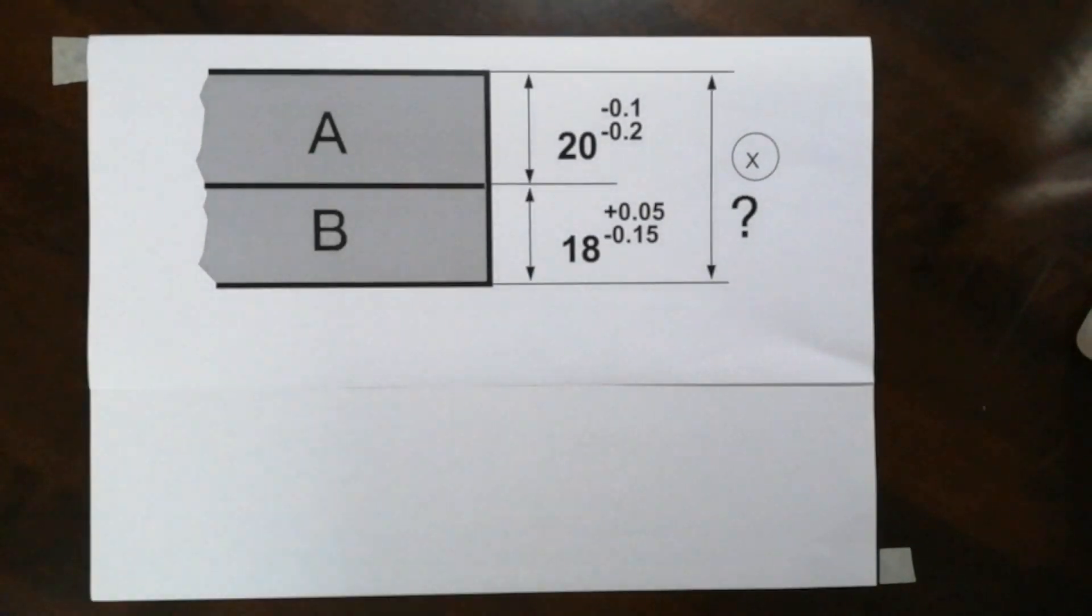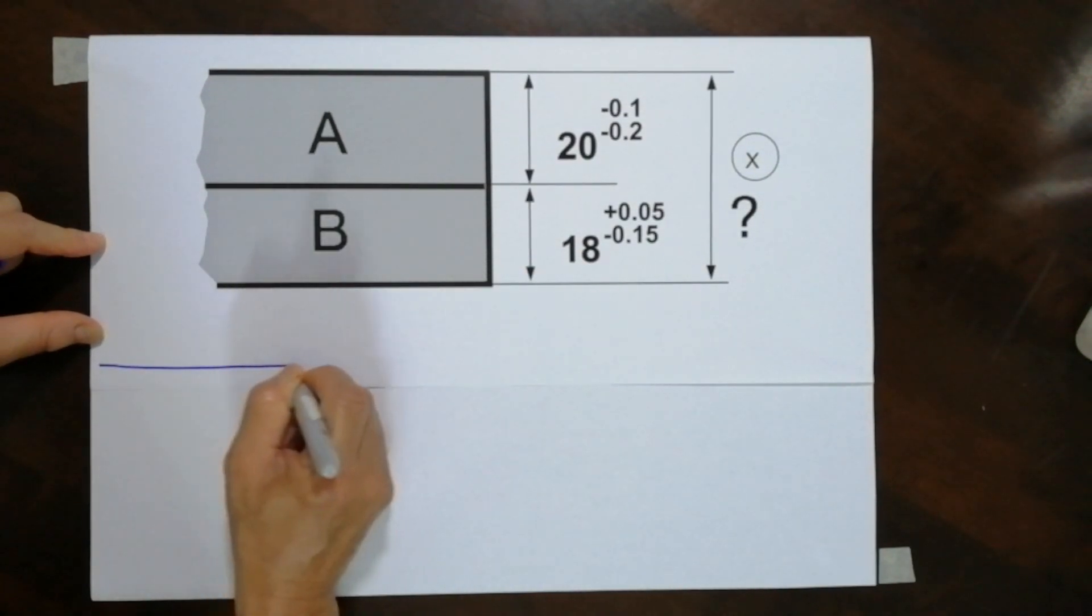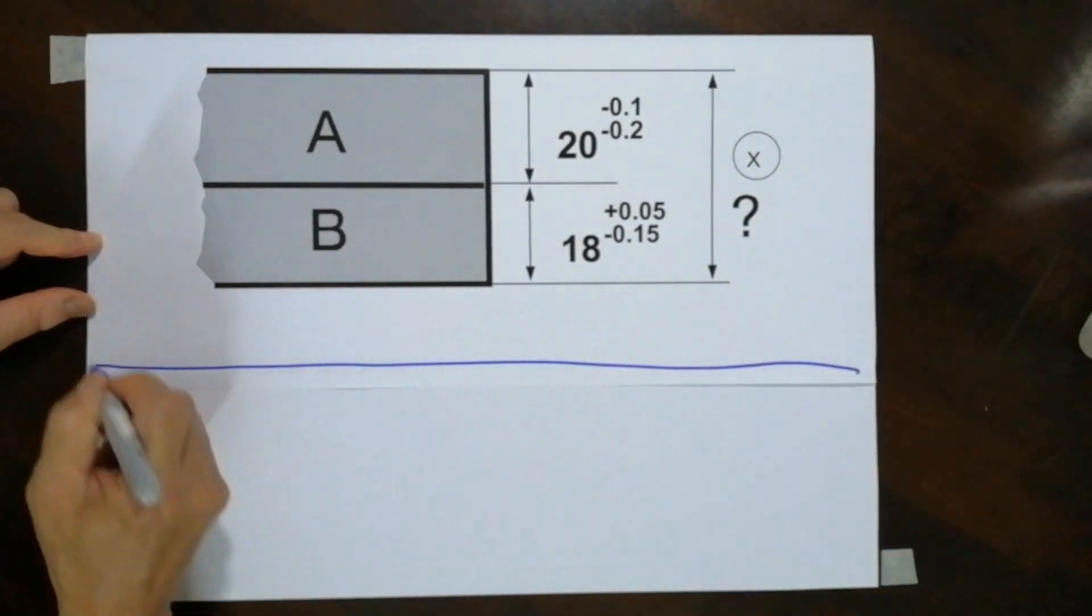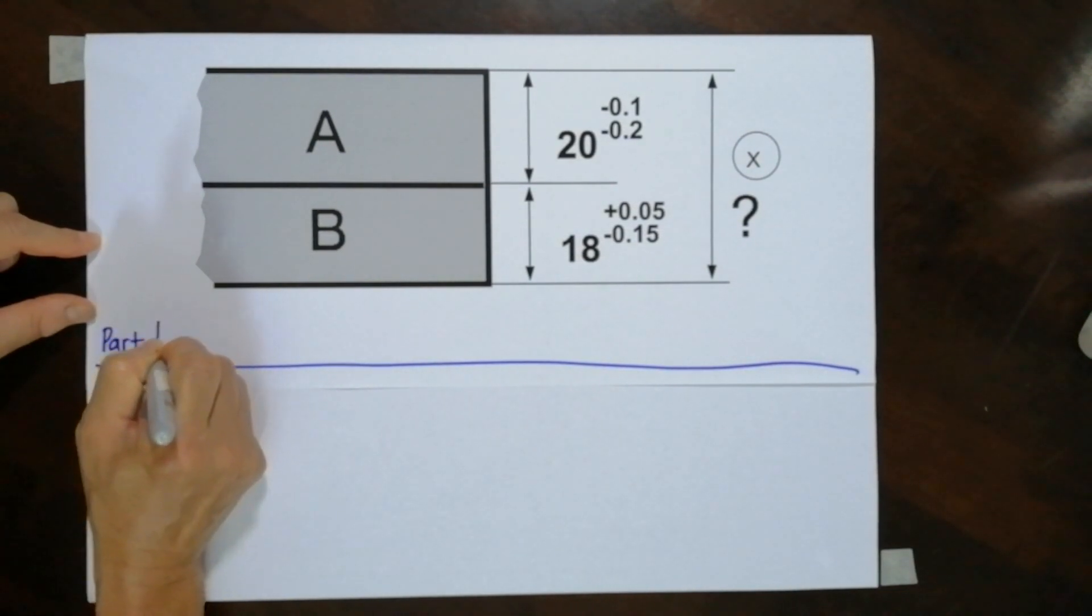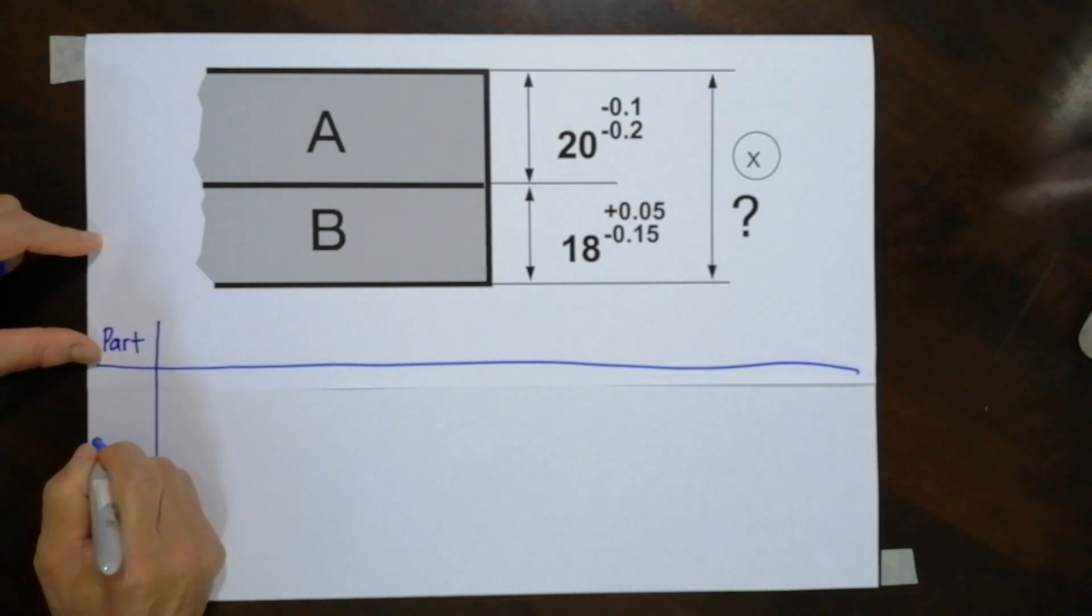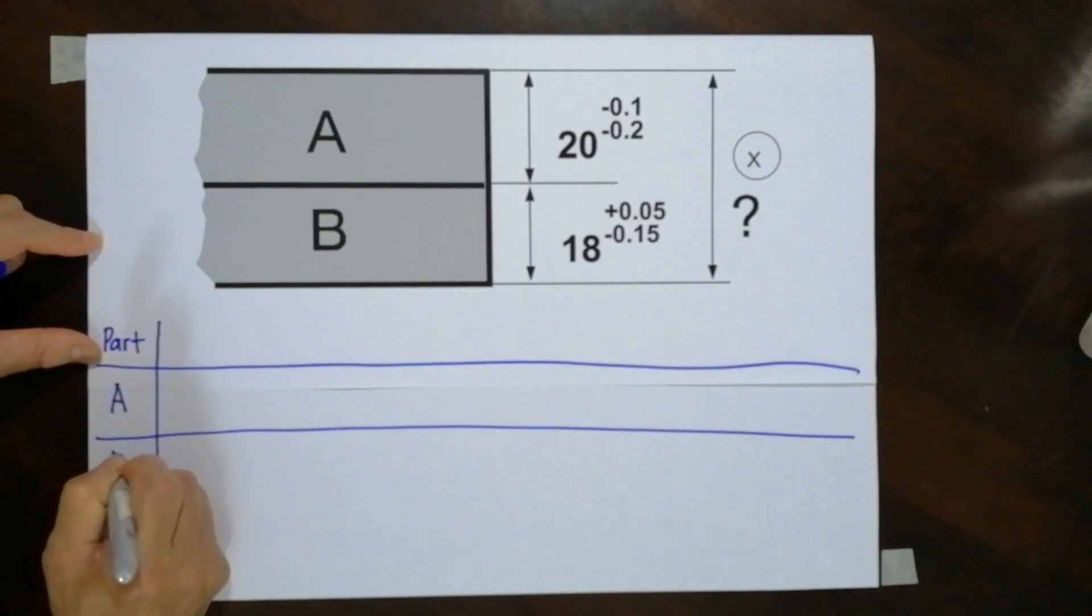So in tolerance stack up, there is an approach that we need to follow. I'm going to show you how to manage this approach. First, we realize there are two parts, two dimensions. I'm going to draw a table, a very long table. I call it part. And because there are two dimensions, I'm going to draw two lines. One is part A, and one is part B.